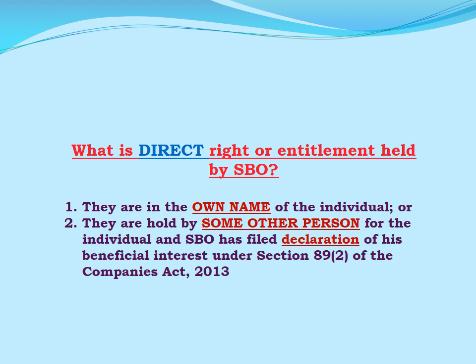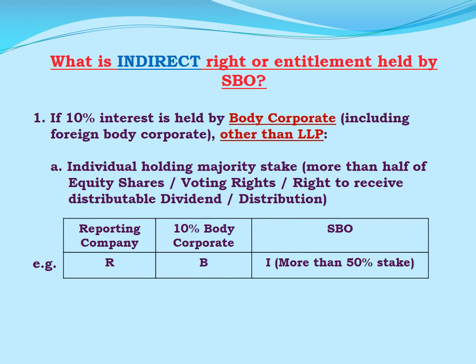Now, what is direct right or entitlement held by a significant beneficial owner? If the shares or voting rights as mentioned above are in the name of the individual owner, or if they are held by some other person for the individual owner and this beneficial interest is under section 89 of the Companies Act 2013, then it is called direct right or direct entitlement.